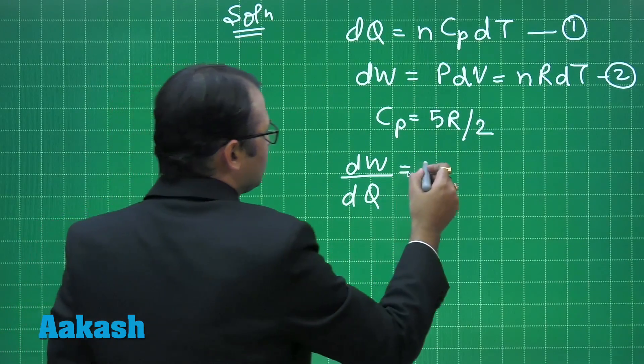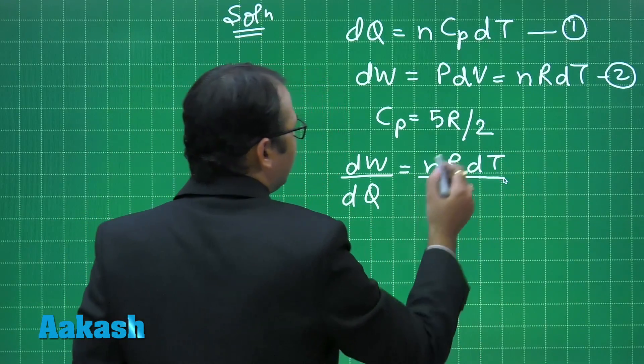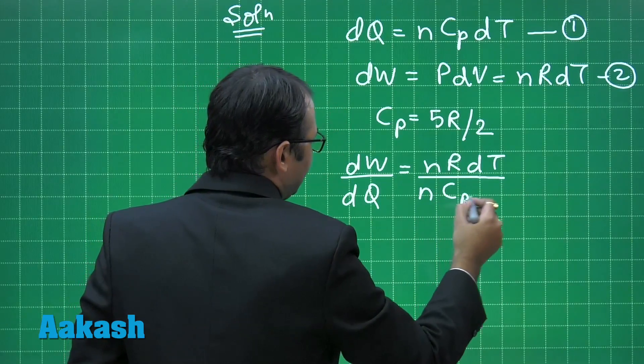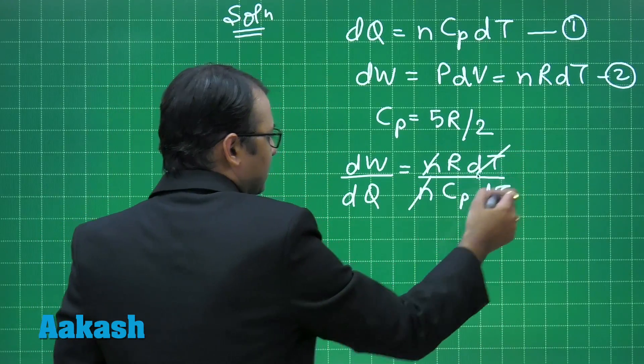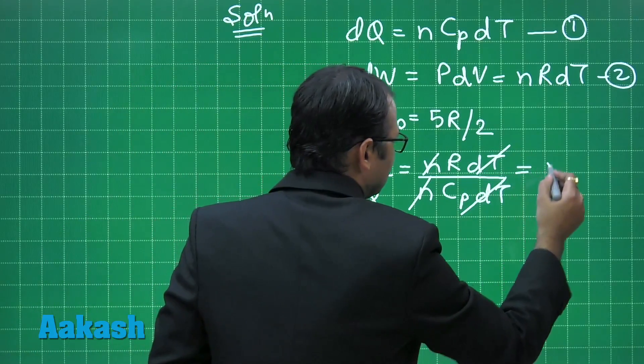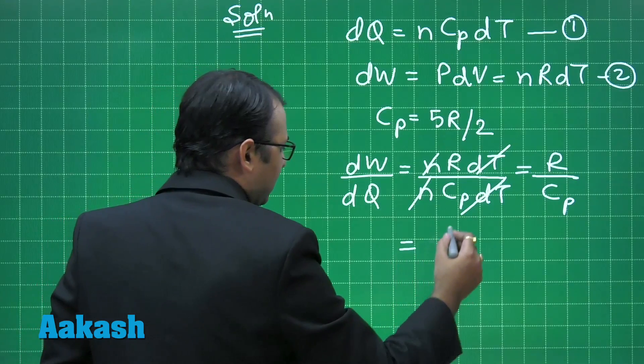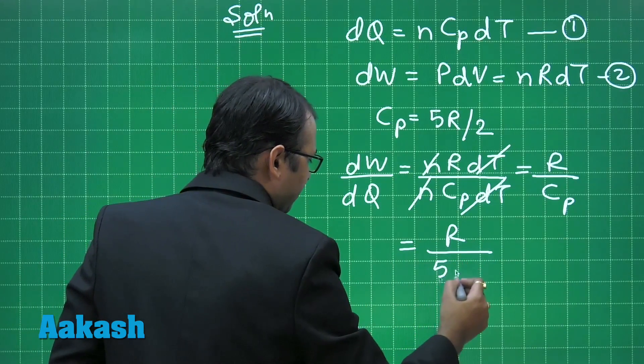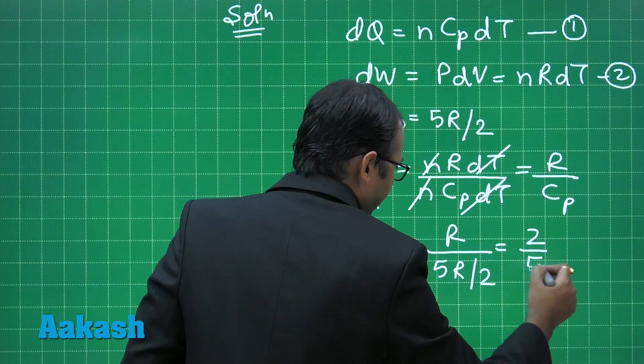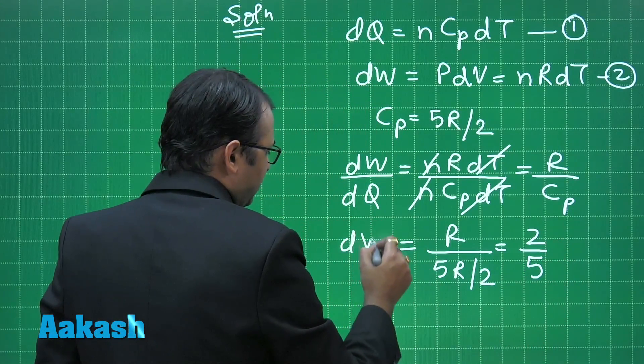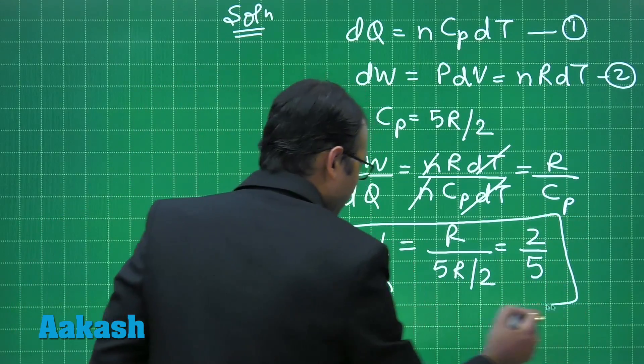would be equal to n R dT divided by n Cp dT, right? So this and this will be cut, this and this will be cut. What is left with is R by Cp. Putting the values of Cp, I have R by 5R by 2, which is 2 by 5. So dW upon dQ is 2 by 5.